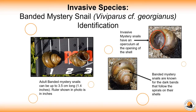Let's start with the Banded Mystery Snail since they are the easiest to identify. Adults can grow up to 3.5 cm long, or 1.4 inches long. Their shells are yellowish to greenish brown in color and have three or four reddish brown bands that follow the spirals on the shell. This is the best identification feature for the Banded Mystery Snail and makes them easy to tell apart from other snail species.